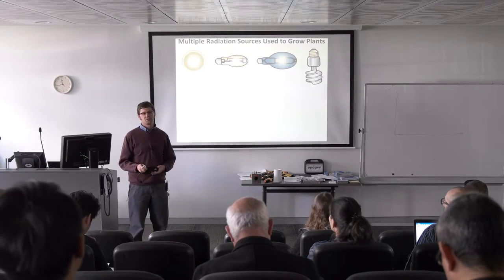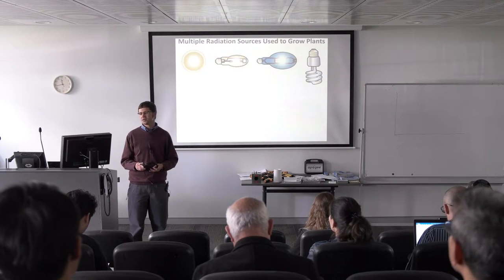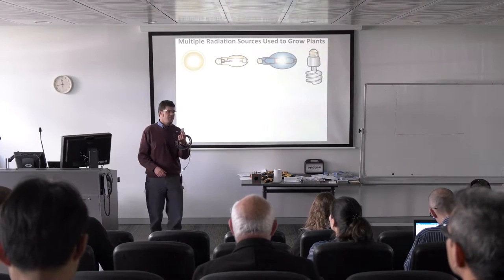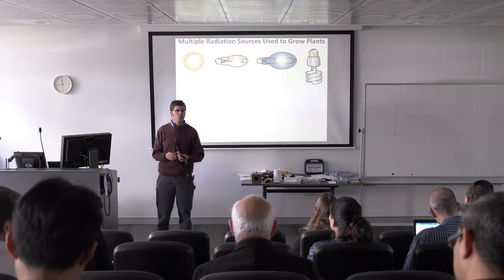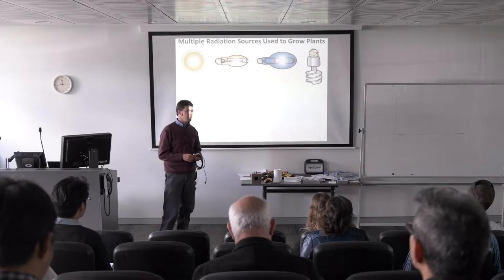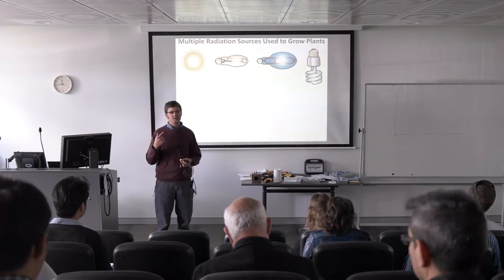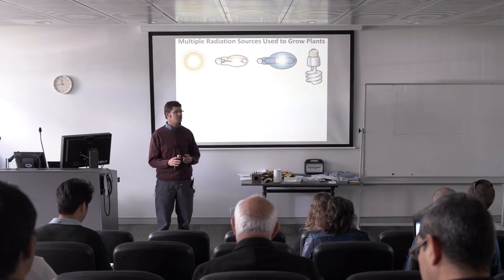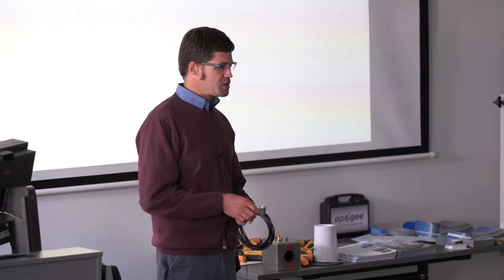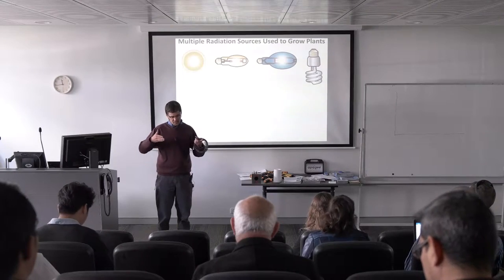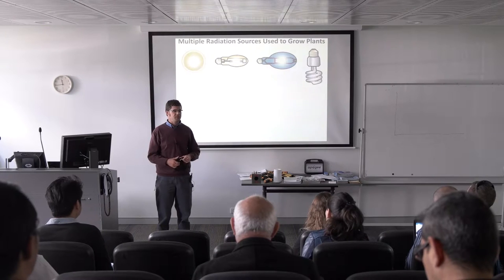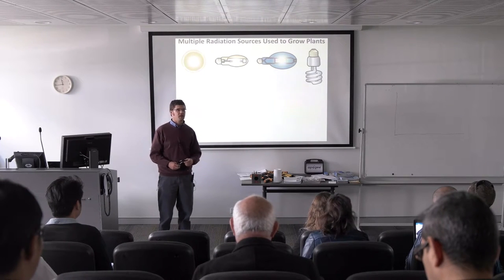I'm going to talk about quantum sensors, or sometimes we call them PAR sensors, photosynthetically active radiation sensors. They look the same but instead of being designed to measure all of the shortwave wavelengths from the Sun or an electric light, they only measure the photosynthetically active wavelengths. That's typically defined as 400 to 700 nanometers — the same wavelengths that the human eye sees are the same wavelengths that drive photosynthesis in plants. It's an often-used measurement in plant research because it tells us how much radiation, or how many photons, are available to make photosynthesis happen.